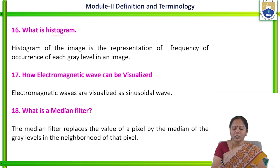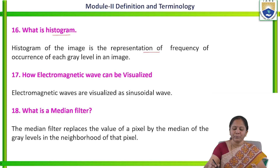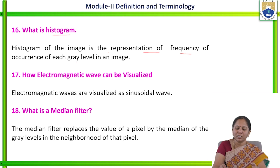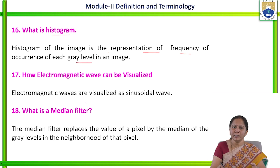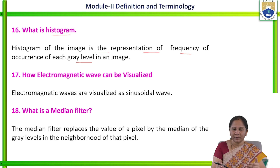What is histogram? Histogram is the graphical representation of an image, which represents the frequency ranges. The histogram of an image is the representation of the frequency of occurrence of each gray level in an image. It represents how many pixel values are having the same intensity.